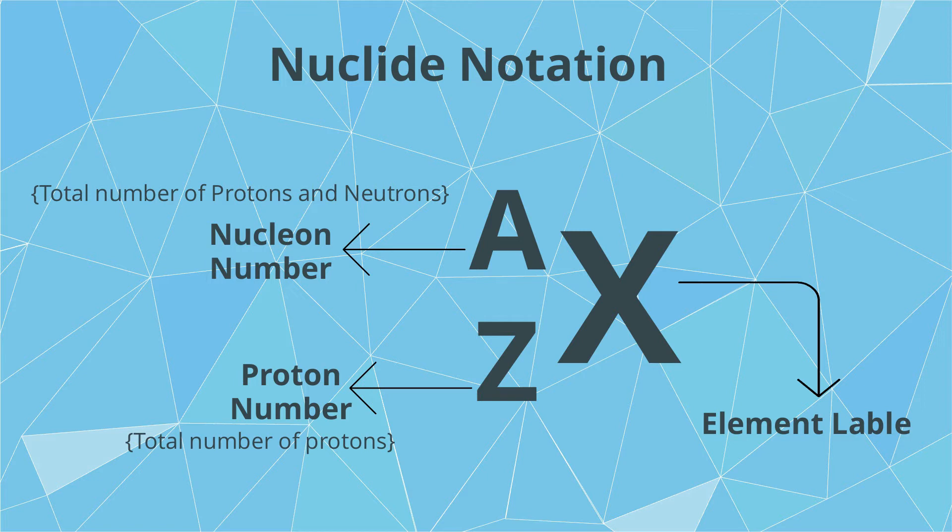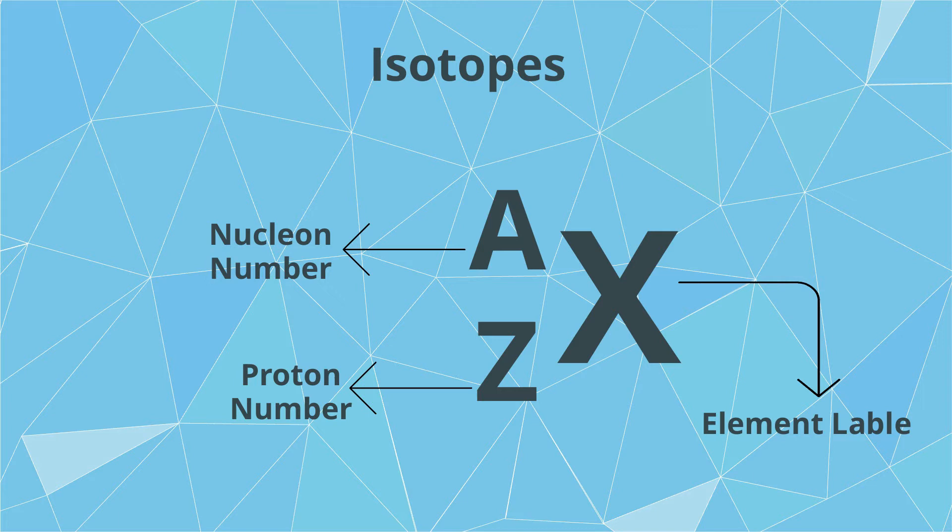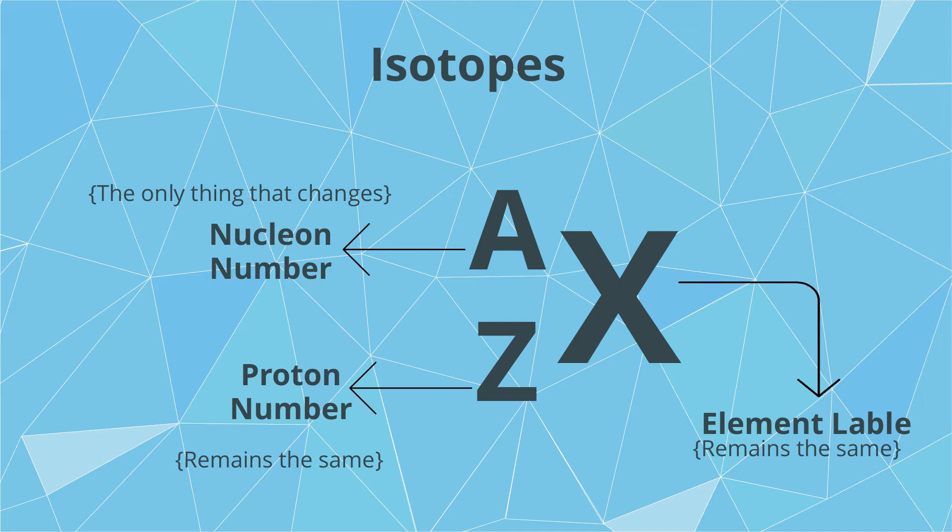Isotopes are atoms of certain elements which have the same number of protons but a different number of neutrons in the nucleus of the atom. An interesting fact about isotopes is that even though they have the same chemical properties, they have different physical properties.